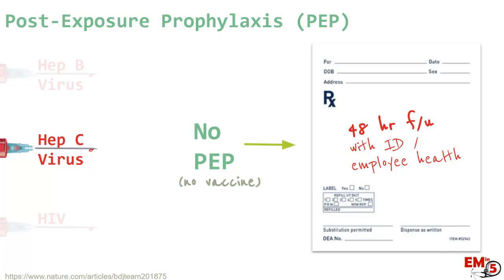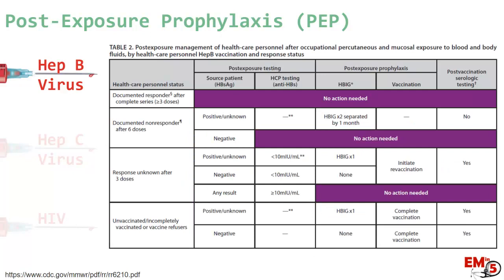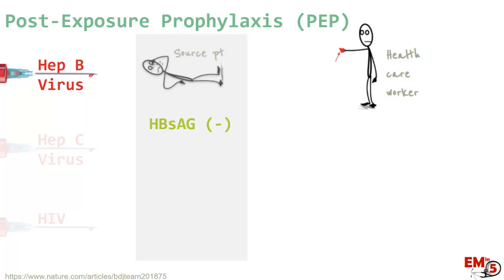Hepatitis B is a little more complex because of the vaccine issue. There is a CDC chart that helps you decide what should be done for the exposure, but you're probably not going to have all that information at midnight on a Saturday when your patient comes to the ER with a needle stick, and it's not that important for that visit. This is more for follow-up. Here's the quick and dirty for what you need in the ER: if you have the source patient's information and you know they're hep B negative, or their blood work comes back that night as negative, there's nothing else to do.